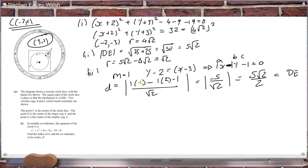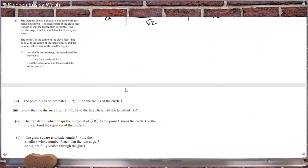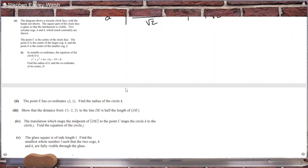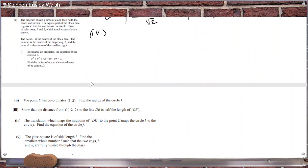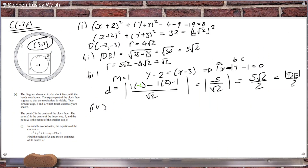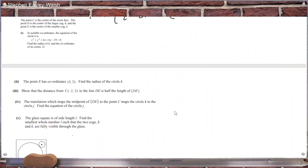DE was 5√2. The midpoint of DE: D is (−2, −3) and E is (3, 2). The midpoint is ((−2 + 3)/2, (−3 + 2)/2) = (1/2, −1/2).